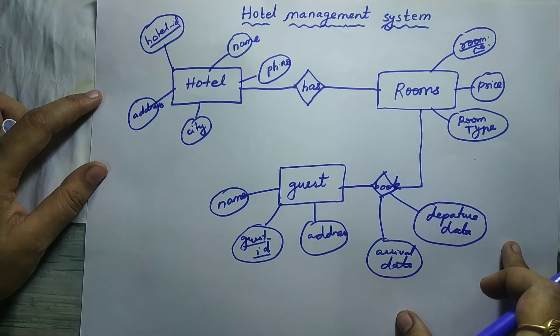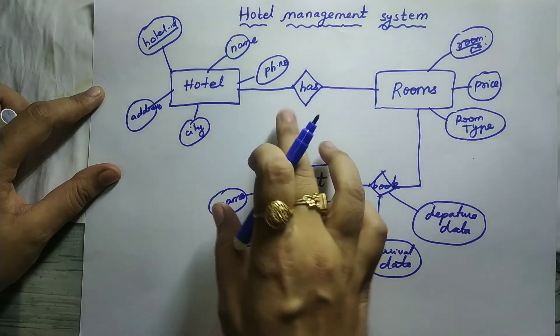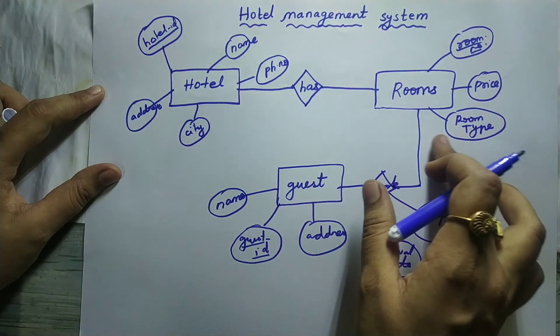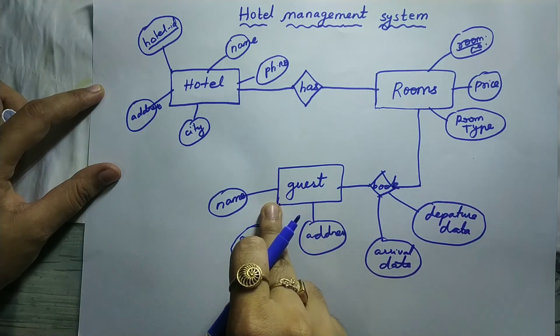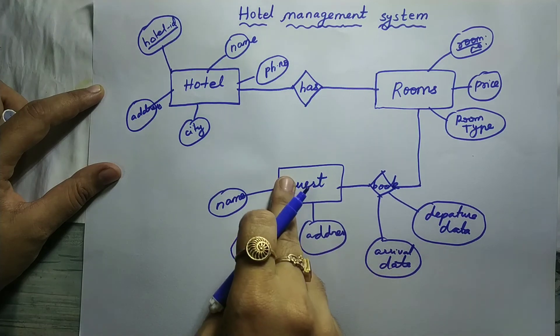So this is the ER diagram for hotel management system. The hotel will have rooms, and those rooms will be booked by the guest. The arrival date and the departure date will be given to the guest.